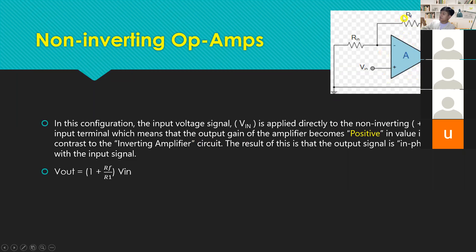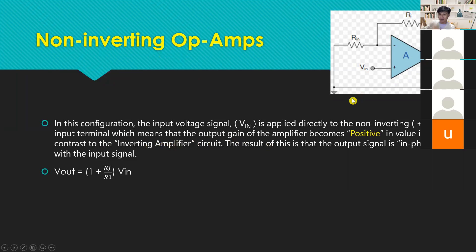So we have a feedback resistor and an input resistor. In this configuration, the input voltage signal Vin is applied directly to the non-inverting (positive) input terminal, which means the output gain of the amplifier becomes positive. Take note: non-inverting does not mean all outputs are positive. Whatever is the sign of your voltage input, that will also be the sign of your output. If you have a negative voltage input, you will also have a negative voltage output.